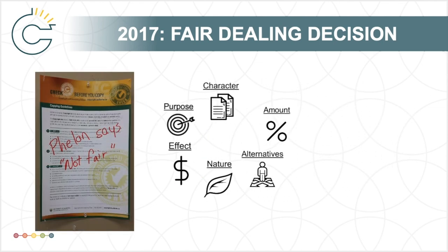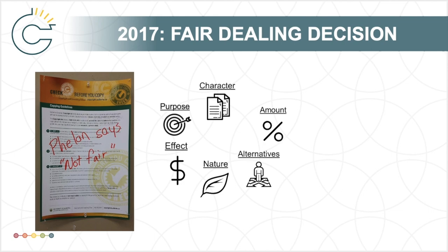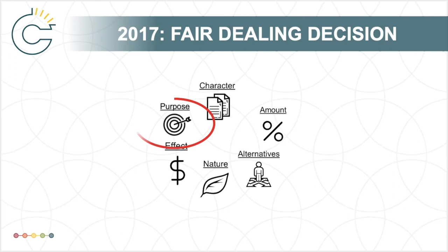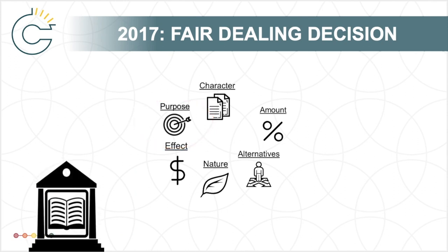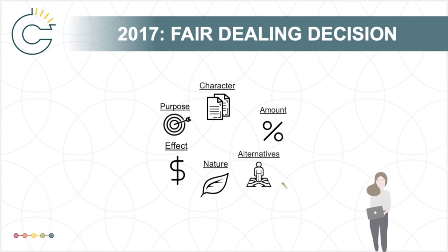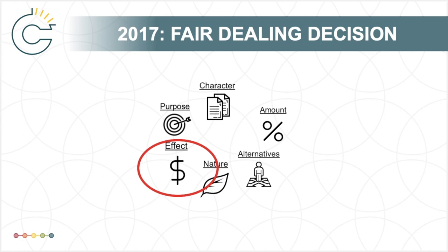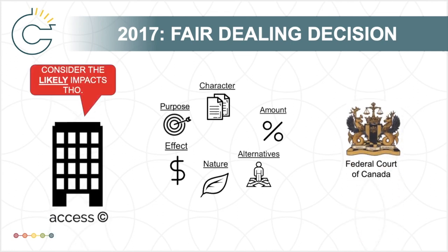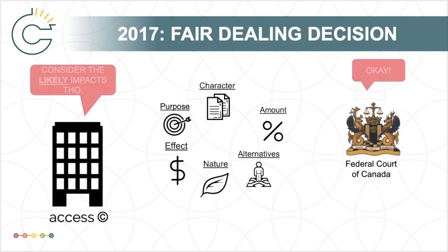It should be noted that the application of the six-factor test by the judge has been criticized for contradicting past jurisprudence. When assessing the purpose of the dealing, Justice Phelan determined there are two users to consider: the university and the students. This interpretation ignored past Supreme Court determinations that the only relevant perspective when considering an allowable purpose is that of the end user — the students. While the alternatives-to-the-dealing factor was ruled more fair in favor of York, Justice Phelan leaned heavily on the effect of the dealing factor. He agreed with Access Copyright that the court should consider all actual and financial impacts of the copying, whereas past Supreme Court cases had not considered impacts that could not be substantiated with evidence. For these reasons, Justice Phelan sided with Access Copyright.